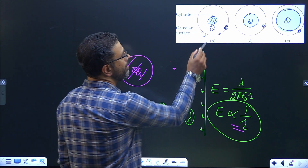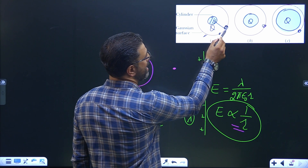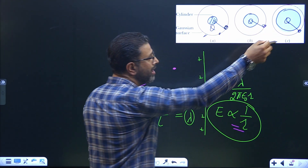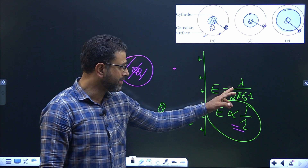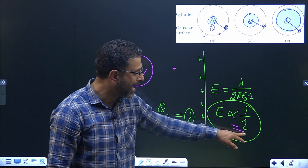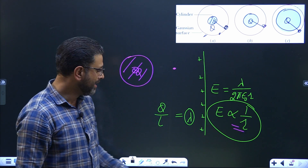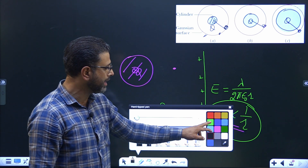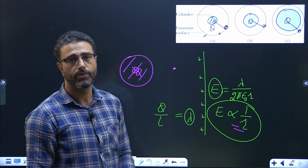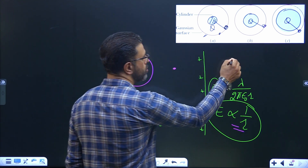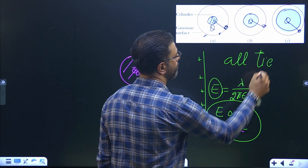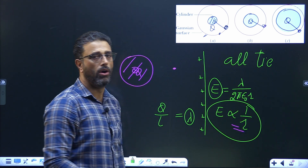All of them have the same radius. So for all three cases, lambda is the same, and for all three Gaussian surfaces, R is the same. That means for all three cases, the electric field is going to be the same. All tie.